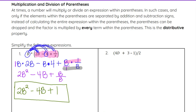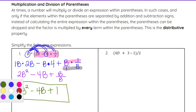This is our final answer — we cannot simplify any further because each term, 2b squared, 4b, and 1, does not have the same variable. The constant 1 has no variable, 4b has a b, and 2b squared has a b squared. So none of them are like terms and we cannot combine them together.